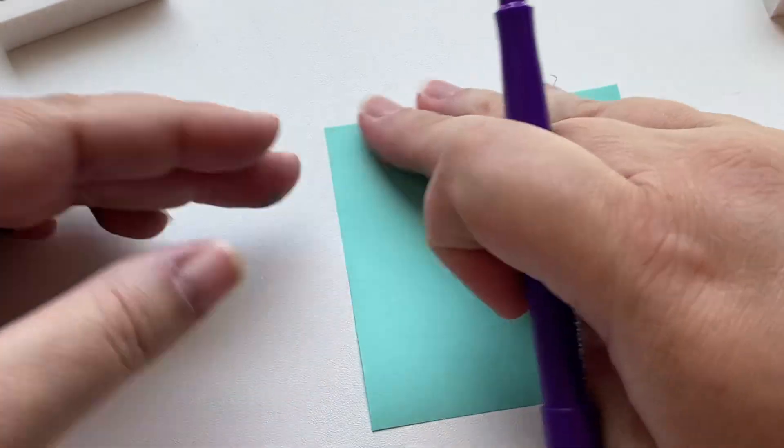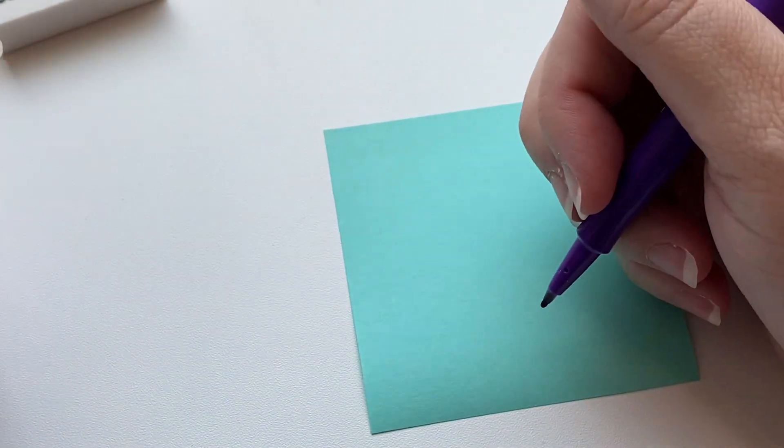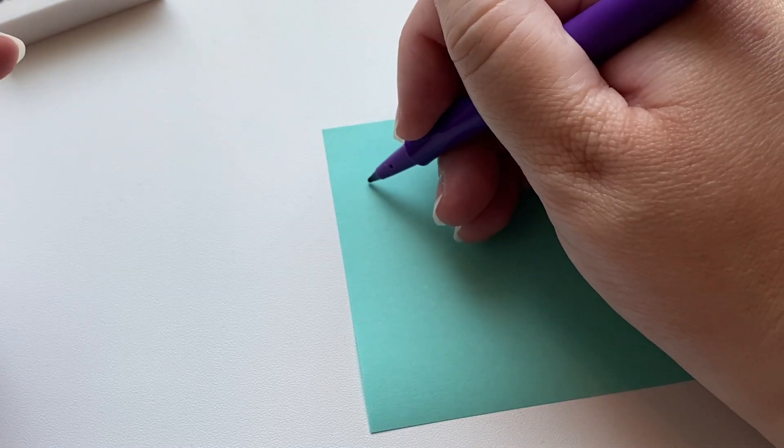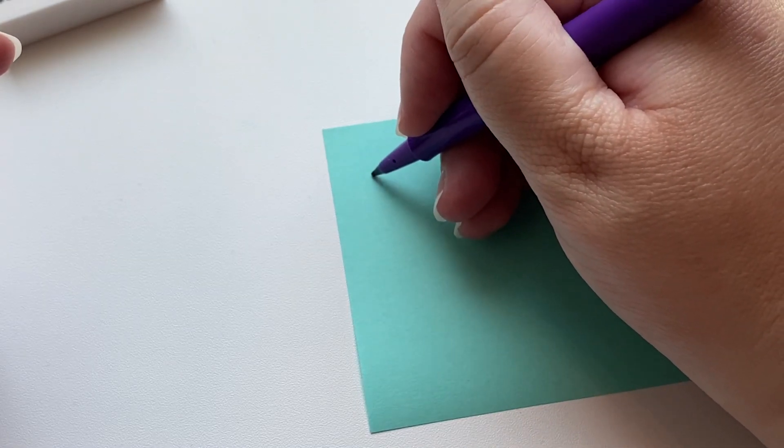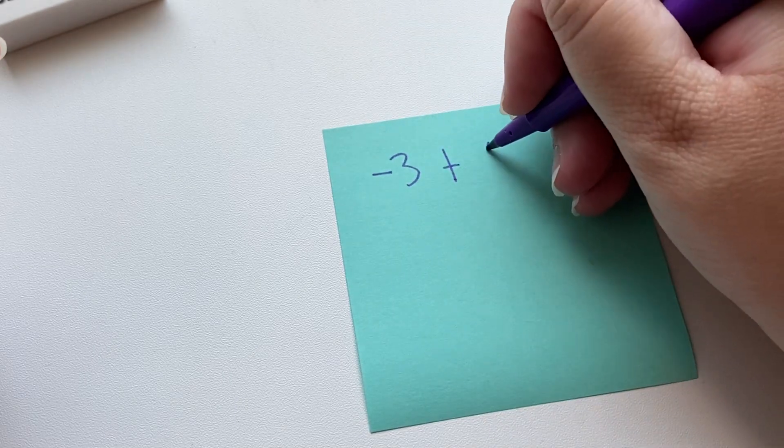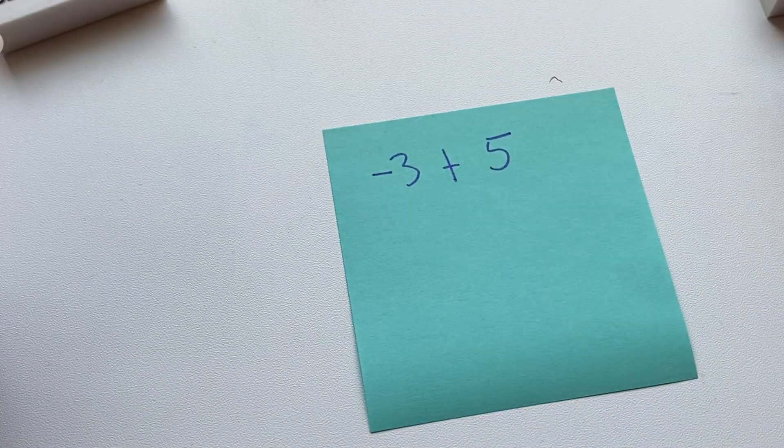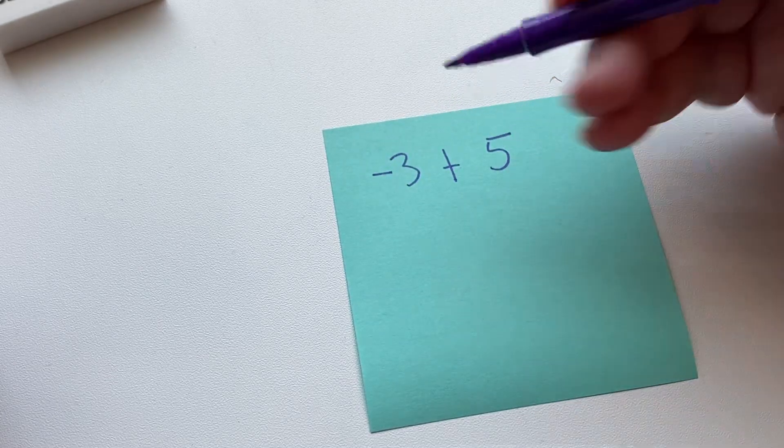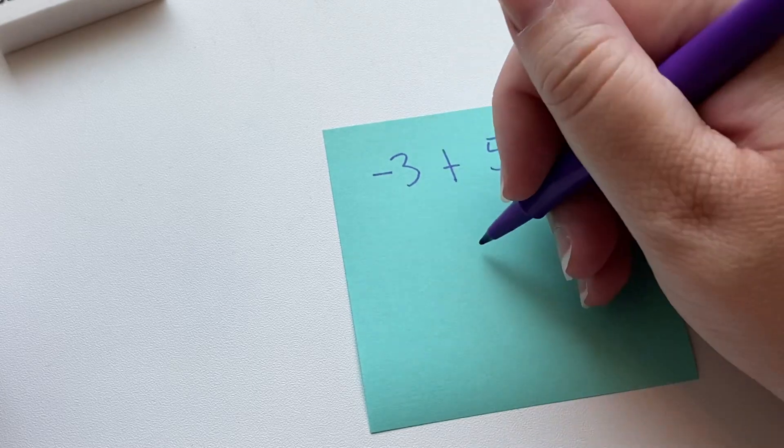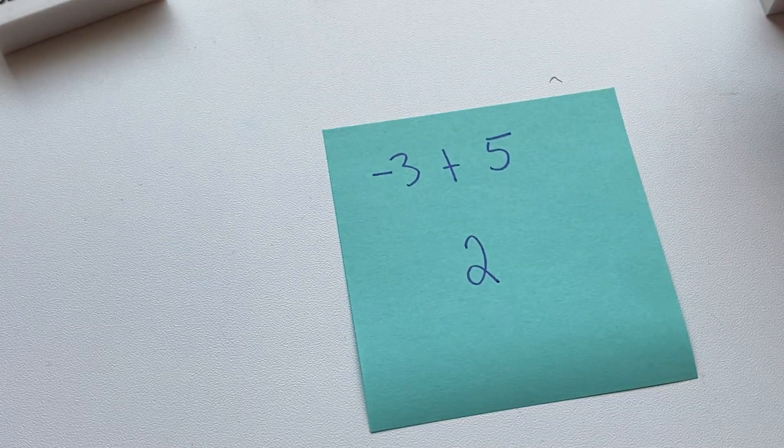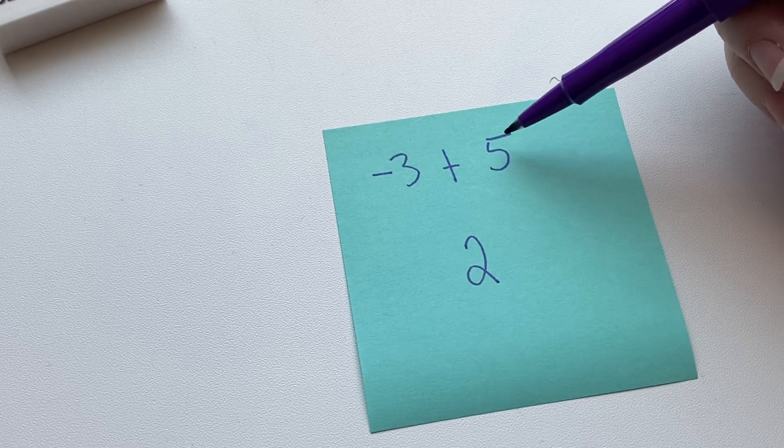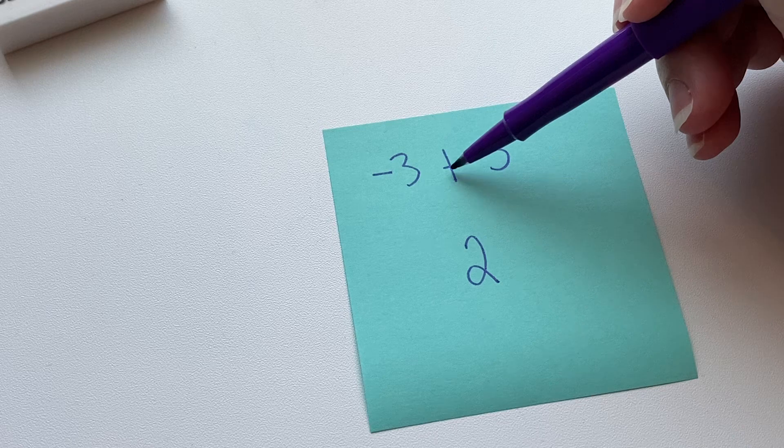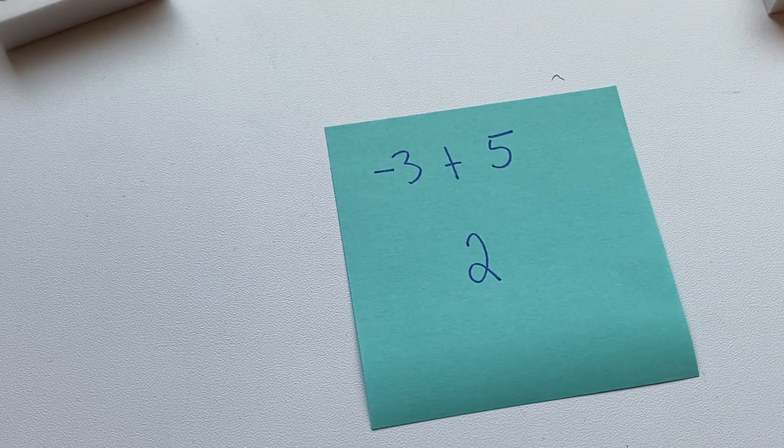We said different signs subtract and keep the sign of the bigger digit. So if we have one like -3 + 5, they have different signs - this is negative, this is positive - and we said subtract. So we subtract the digits. The difference between them is 2, and we're going to keep the sign of the larger digit. 5 is a larger digit than 3, so we're going to keep the sign of the 5, and the 5 is positive, so we're going to keep it at a positive 2.